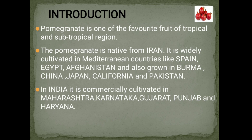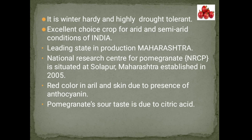Pomegranate is one of the favorite fruits of tropical and subtropical regions. It is native from Iran and is widely cultivated in Mediterranean countries like Spain, Egypt, Afghanistan, and also grown in Burma, China, Japan, California and Pakistan. In India, it is commercially cultivated in Maharashtra, Karnataka, Gujarat, Punjab and Haryana. It is winter hardy and highly drought tolerant — an excellent choice crop for arid and semi-arid conditions. The leading state in production is Maharashtra. The National Research Centre for Pomegranate is situated at Solapur, Maharashtra, established in 2005. Red colour in aril and skin is due to the presence of anthocyanin, and the sour taste is due to citric acid.